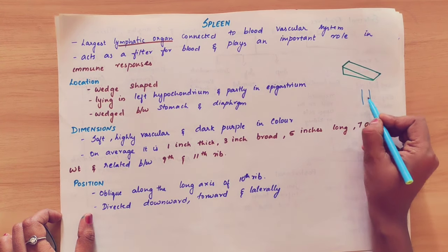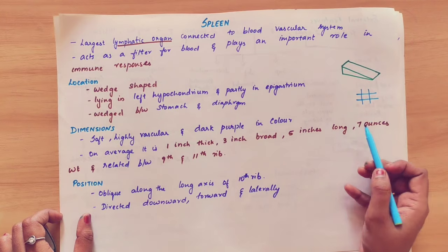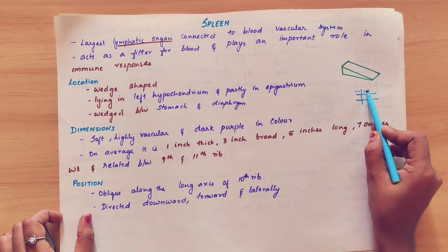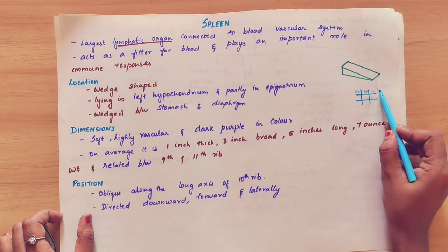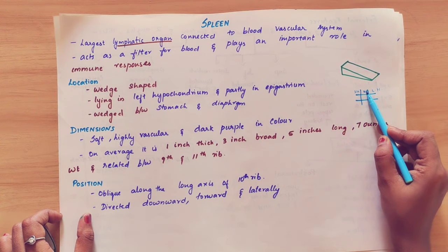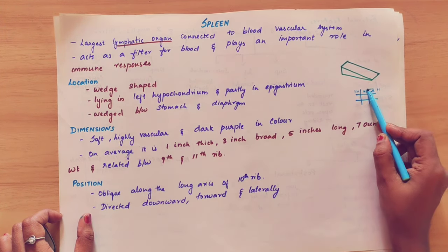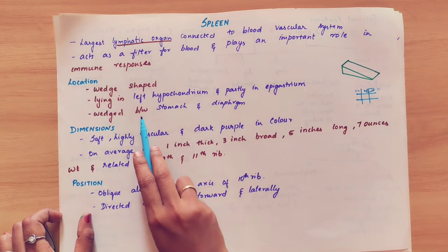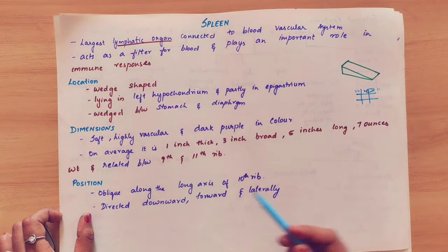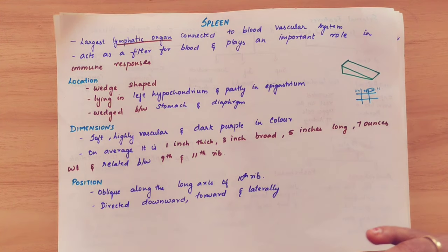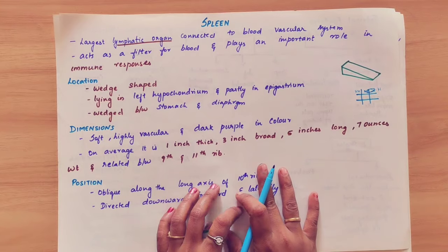You all know the nine regions of the abdomen. The nine regions include the right hypochondrium, epigastrium, and left hypochondrium. The spleen lies in the left hypochondrium and partly in the epigastrium. It is wedged between the stomach and diaphragm.